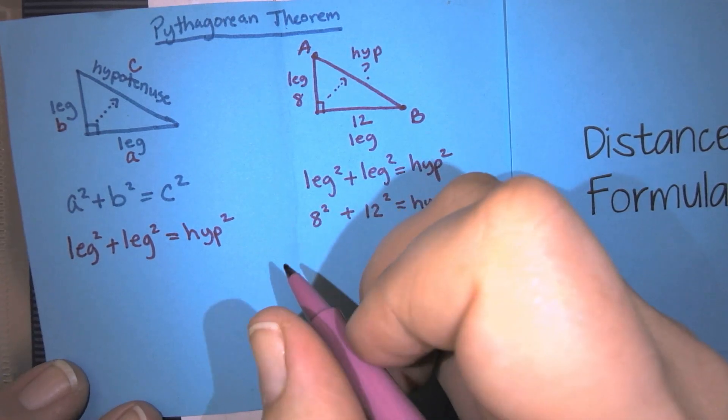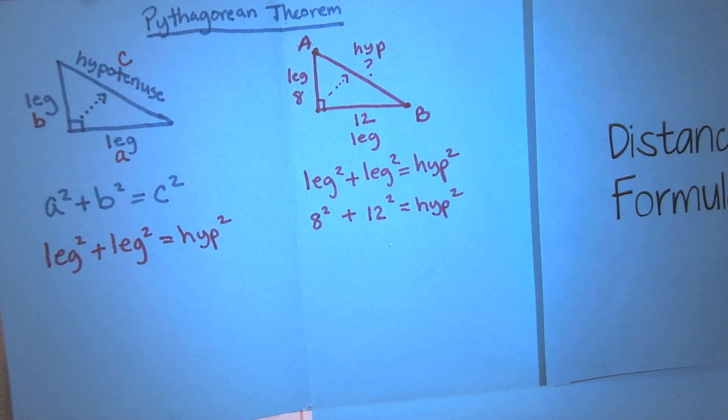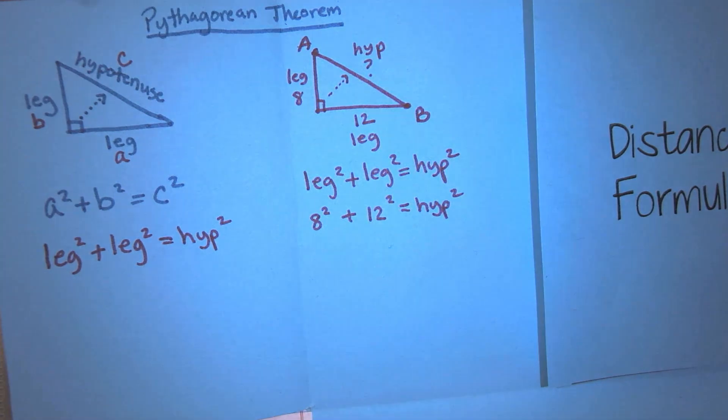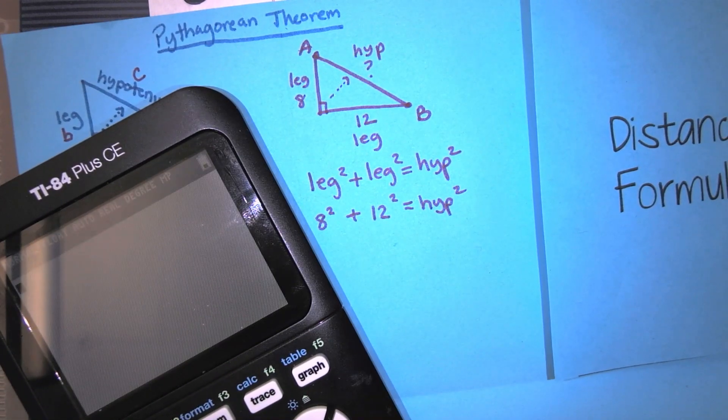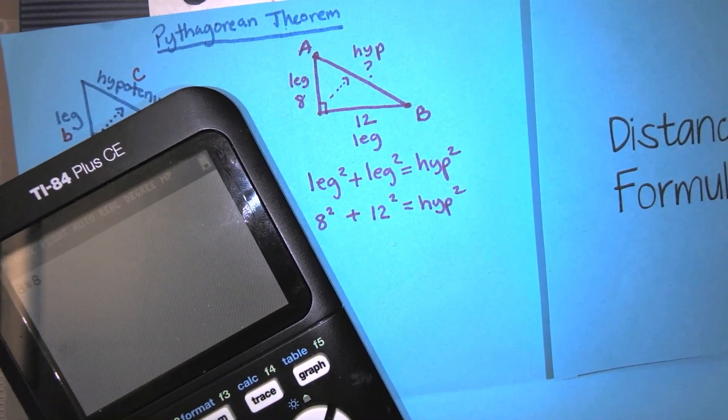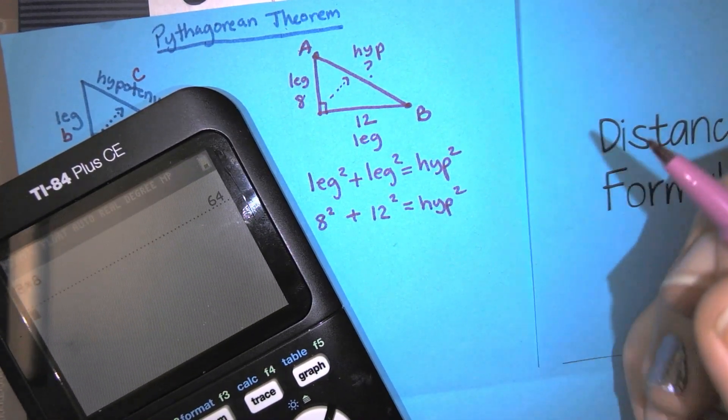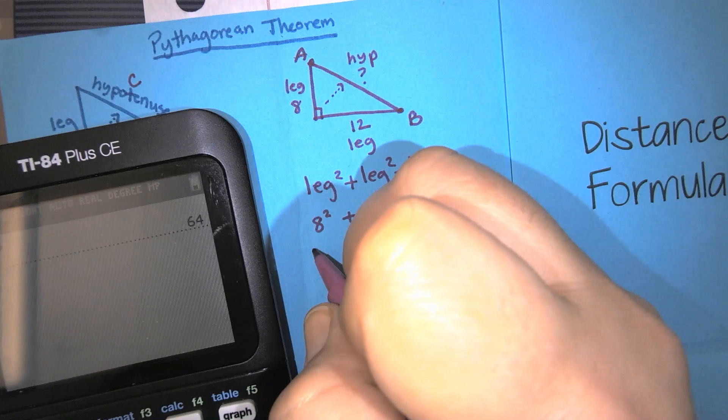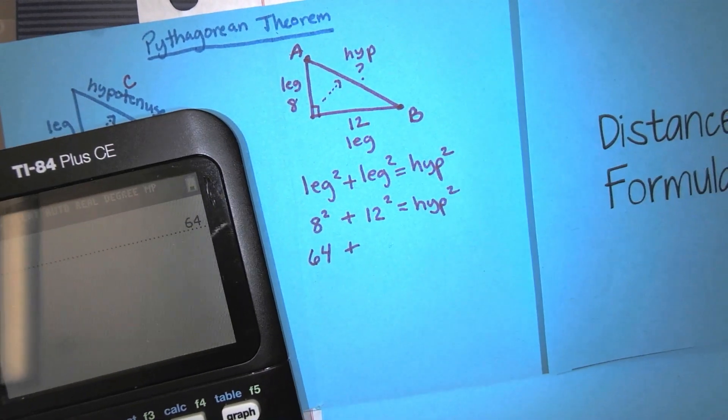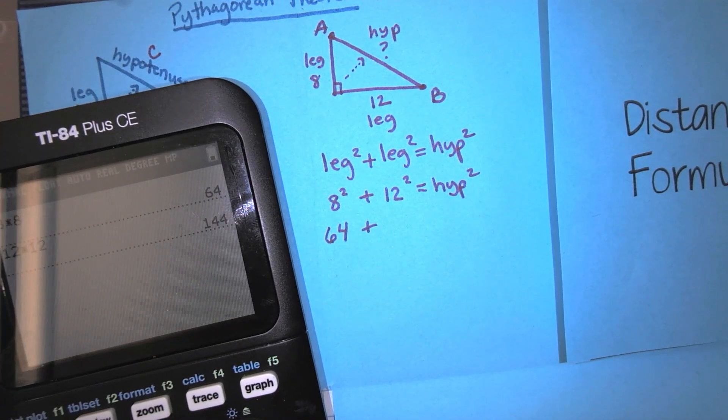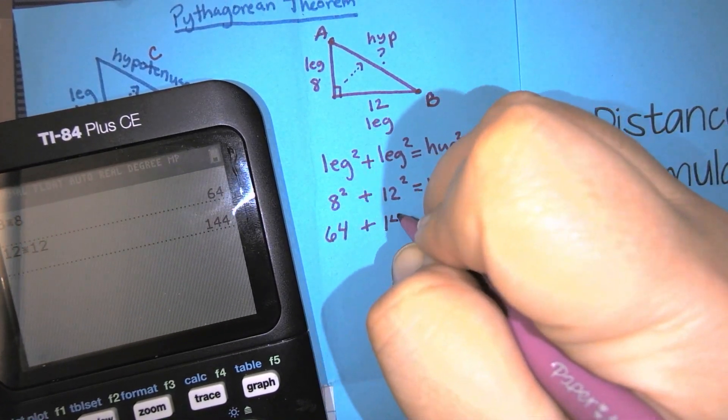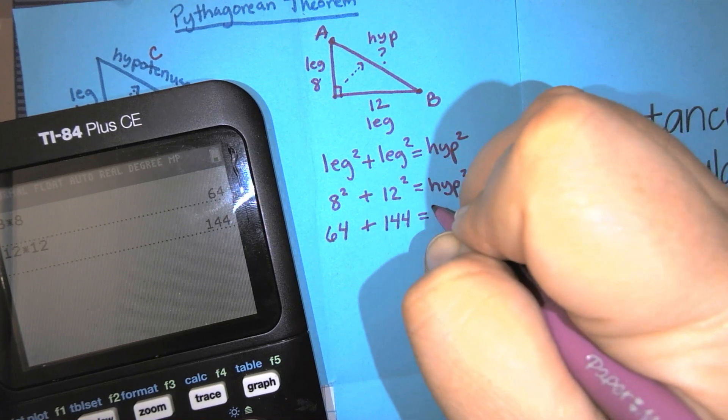So I'm going to break this down one piece at a time. I need to know what squared means. So squared means I'm multiplying it by itself. If I grab my calculator, I'm going to do 8 times itself. Which means I'm going to do 8 times 8. And I get 64. So now instead of 8 squared, I'm going to write 64. Plus 12 squared, which is 12 times 12. So 12 times 12, which is 144. 144 equals hyp squared.